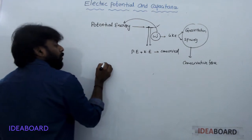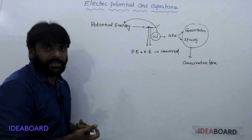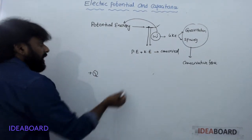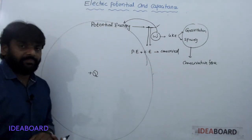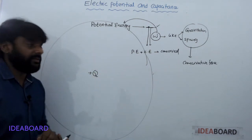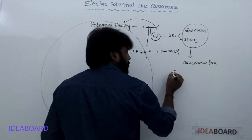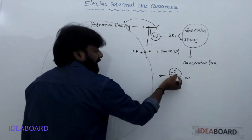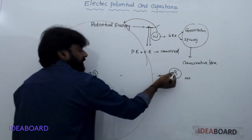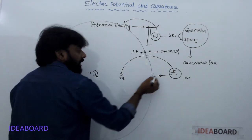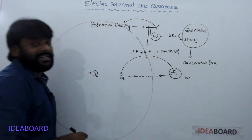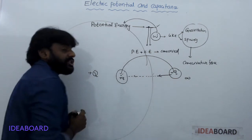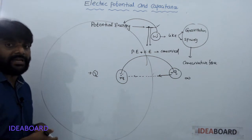In a similar manner, Coulomb force — that means electrostatic force — is also a conservative force. For example, here there is a positive charge +Q, and surrounding it there is an electric field. Another positive charge is taken from infinity to a certain point in this field, and some work is required against the electric field. That work done is stored in the form of potential energy — that is, electrostatic potential energy.